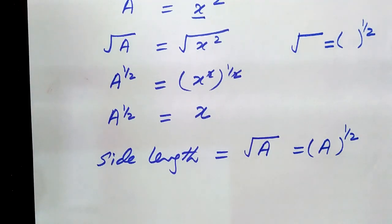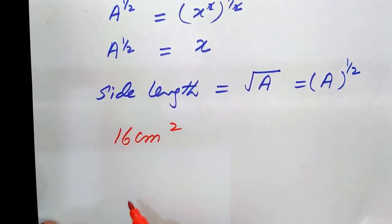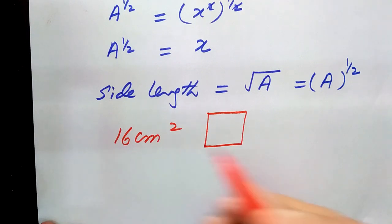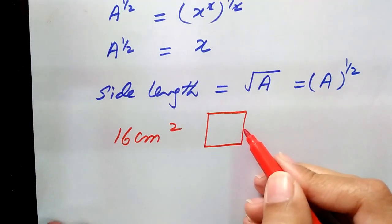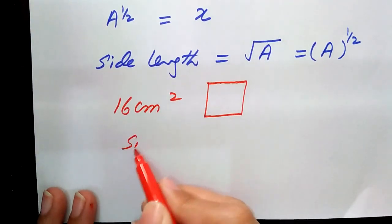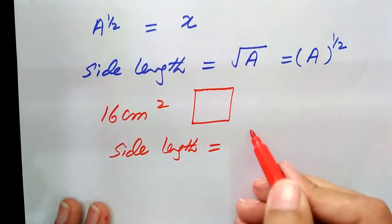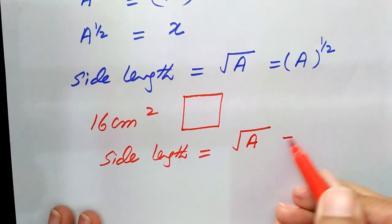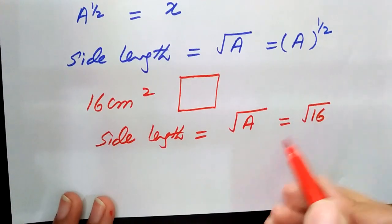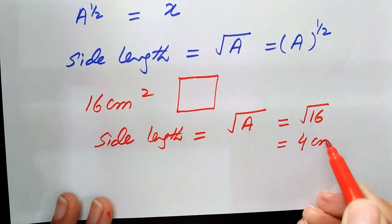For example, if we are given a square with area 16 cm², we find the side length using this formula. Side length equals the square root of 16, which equals 4. So the side length equals 4 centimeters.